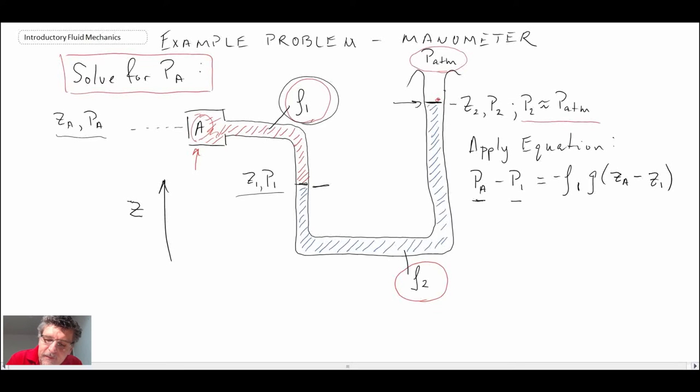What we can write then is P₁ minus P₂, and that will be equal to—now the density that we're dealing with here between 1 and 2 is the blue fluid, and that has density ρ₂—so we write minus ρ₂ times g, the gravitational constant, and then with our convention it would be z₁ minus z₂. We have those two equations.